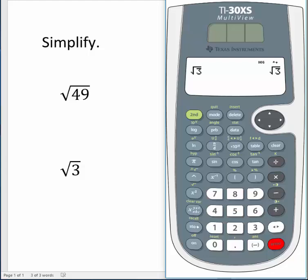No, we can't get a nice whole number answer for the square root of 3. But we can find a decimal approximation.